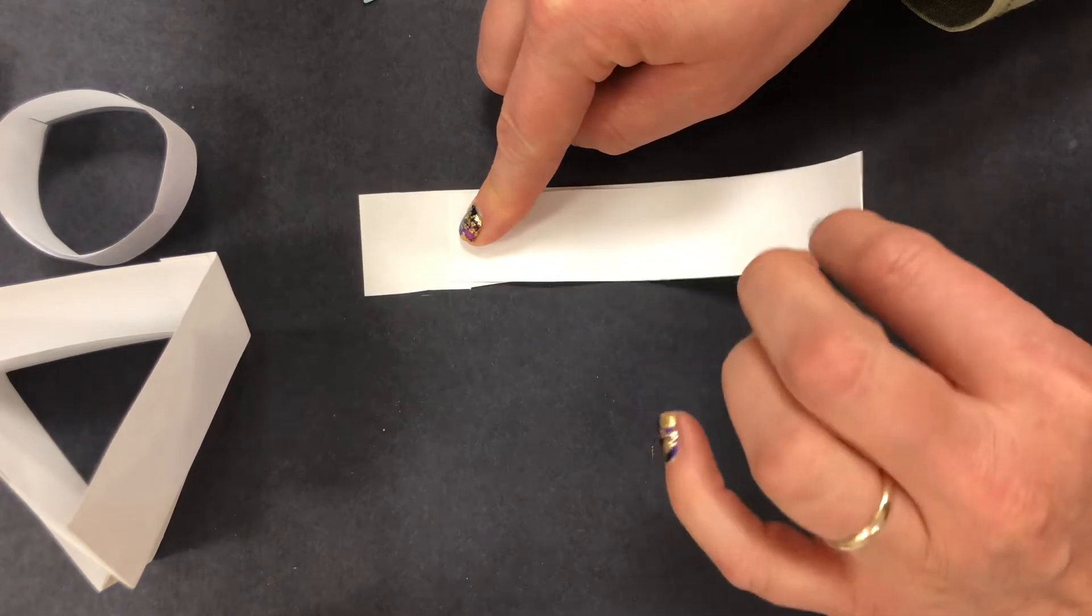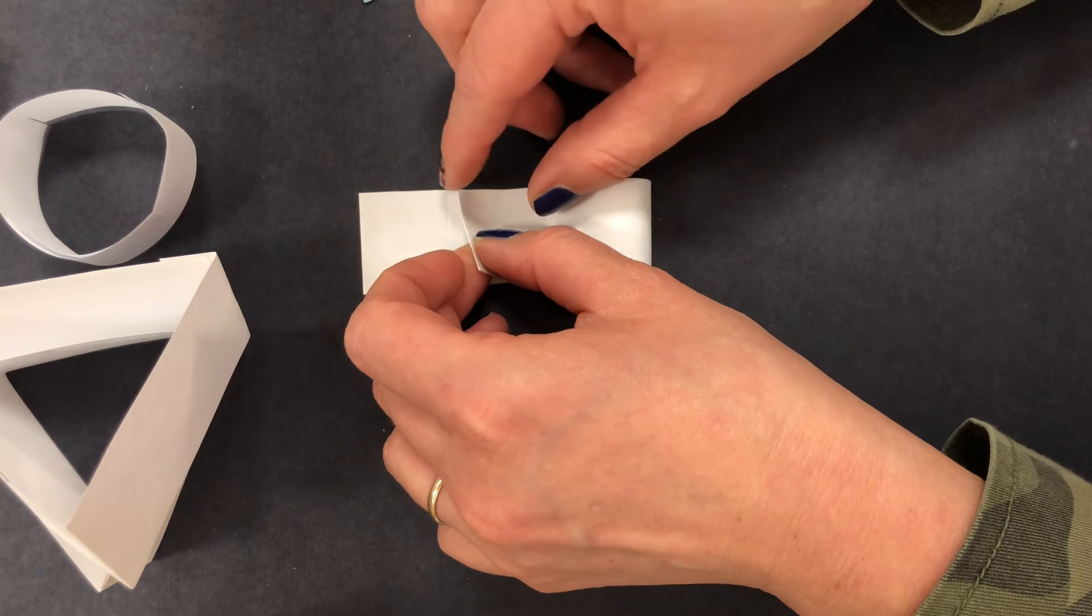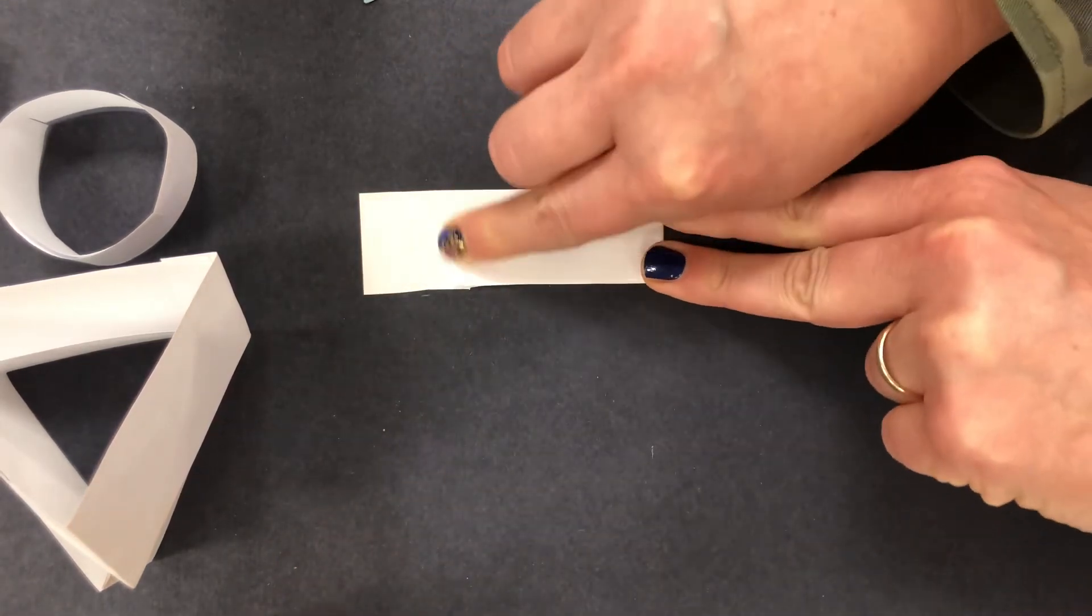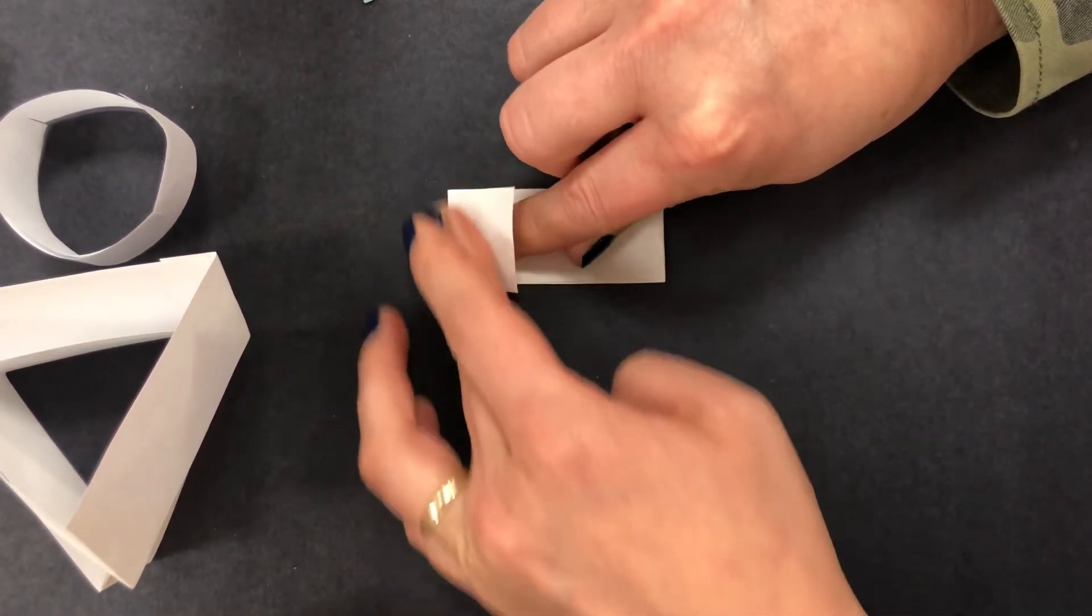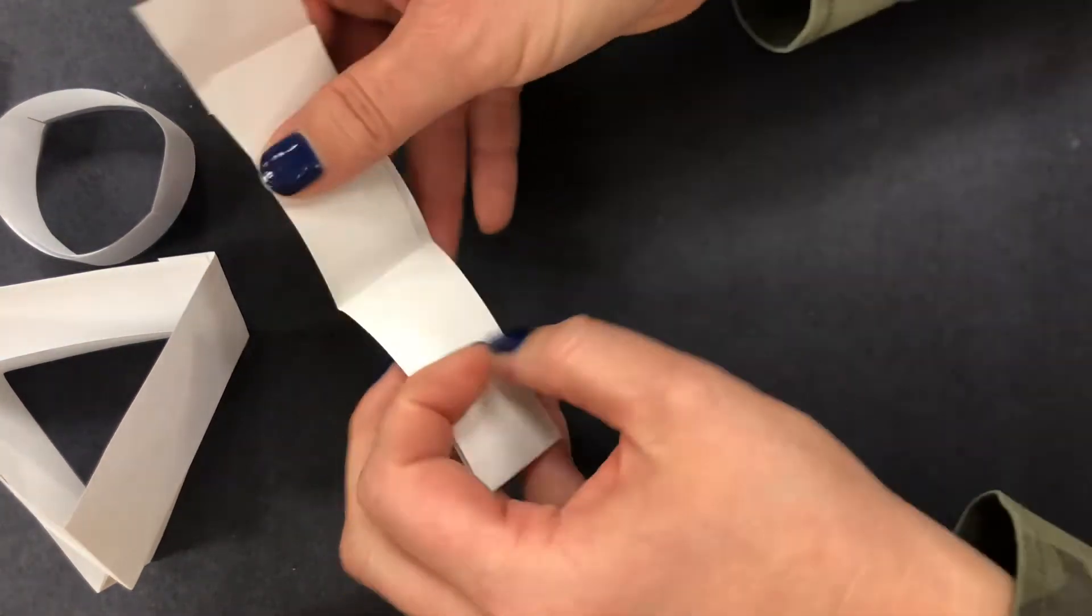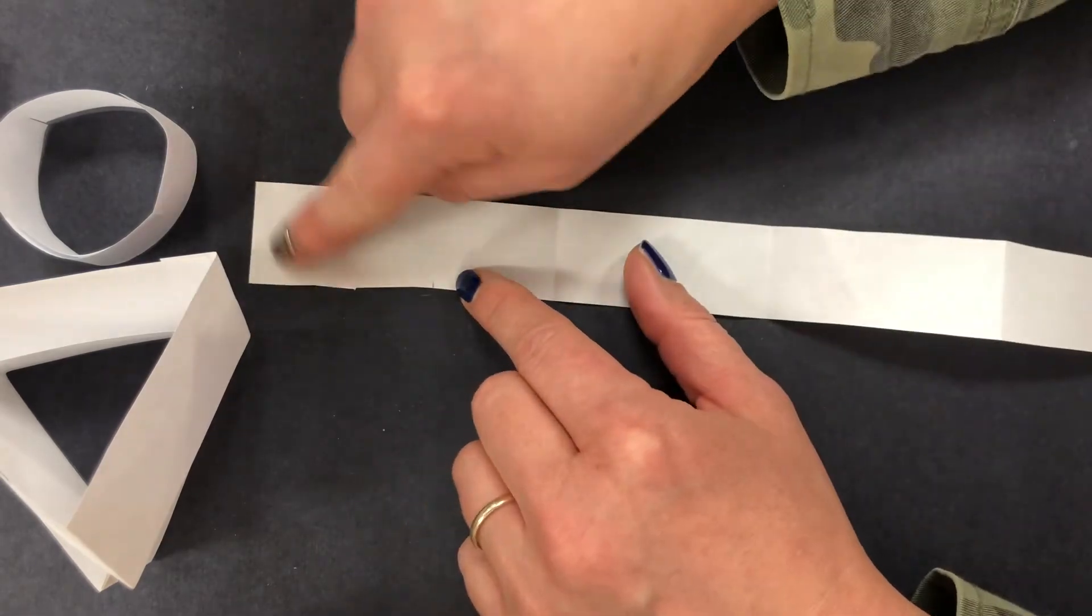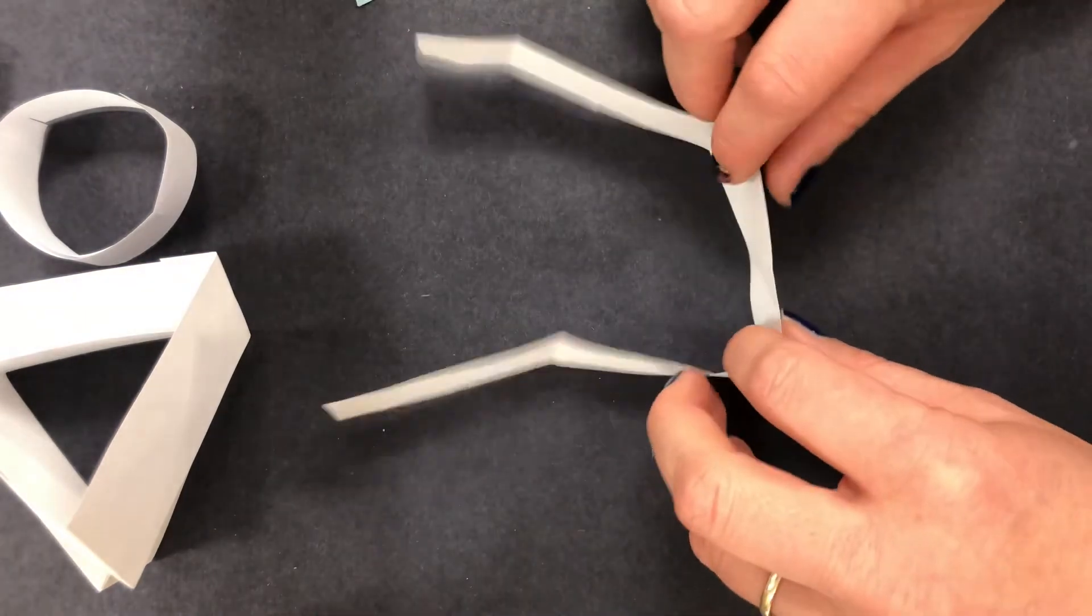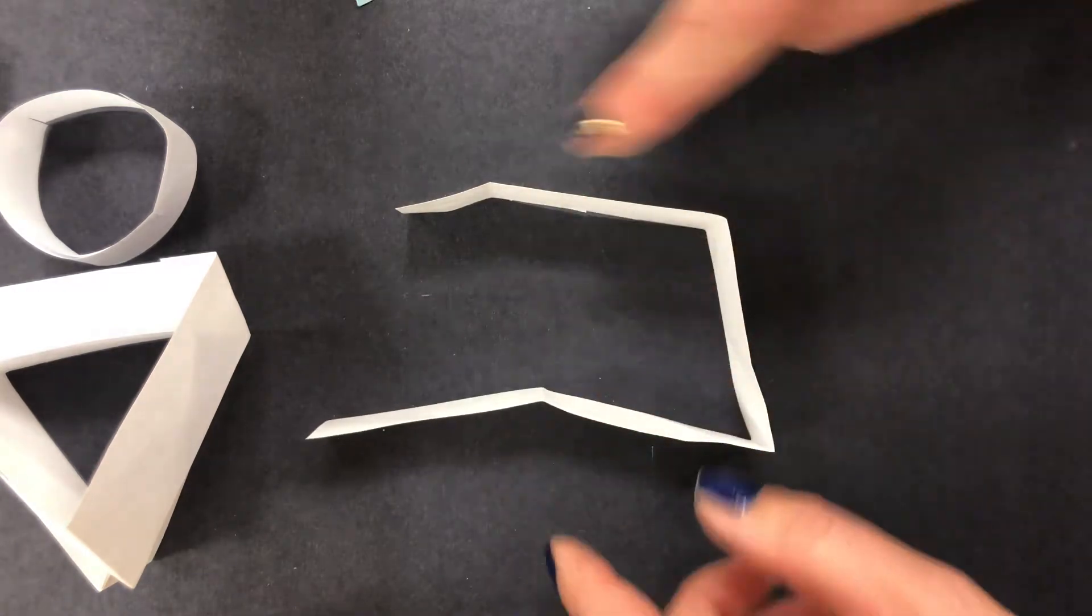Then I'm going to take the end and I'm going to pull it back to where my other piece ended, leaving that same little gap. And I'm going to fold that up a little bit to remind myself that that's my overlap part. I'm going to unfold it. So I've got one, two, three, four sections plus a little bit for overlapping.